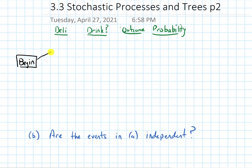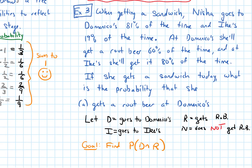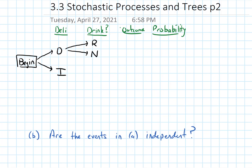She has two options for which deli she goes to: she'll either go to Domenico's (D) or she'll go to Ike's (I). At each of those places, maybe she'll get a root beer or not. From Domenico's, I'll draw an arrow to R if she gets a root beer, and N for not getting a root beer. The same applies from Ike's. So the outcomes are DR, DN, IR, and IN.